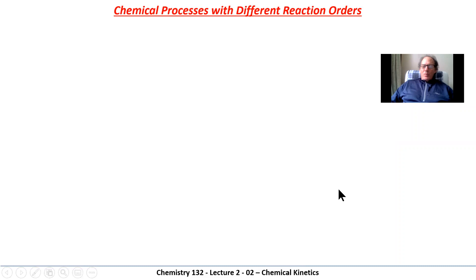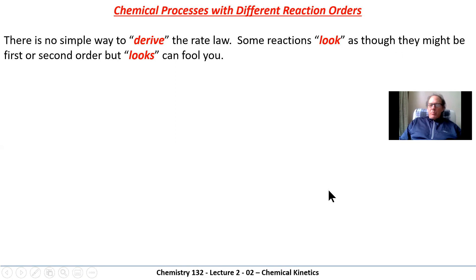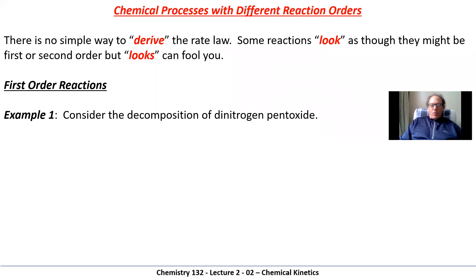Hello, everyone. Welcome to the second lecture in kinetics. This time we're going to deal with different reaction orders and show you how to derive rate expressions from data. There is no simple way to find a rate law from a chemical equation. Some equations look simple, and you might think you can identify the reaction orders, but you really can't until you look at experimental data.